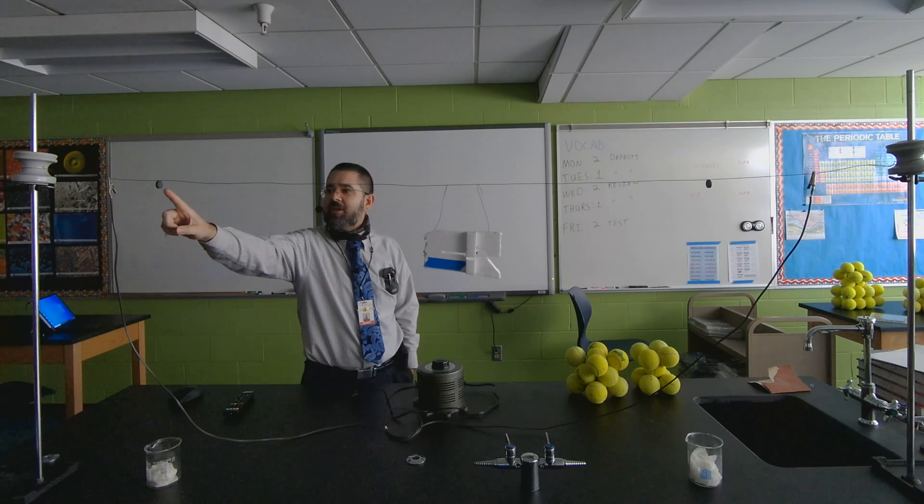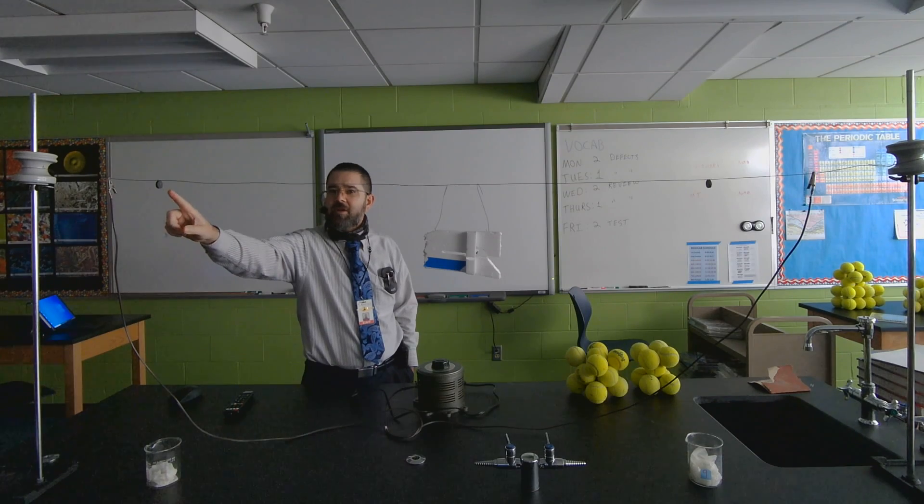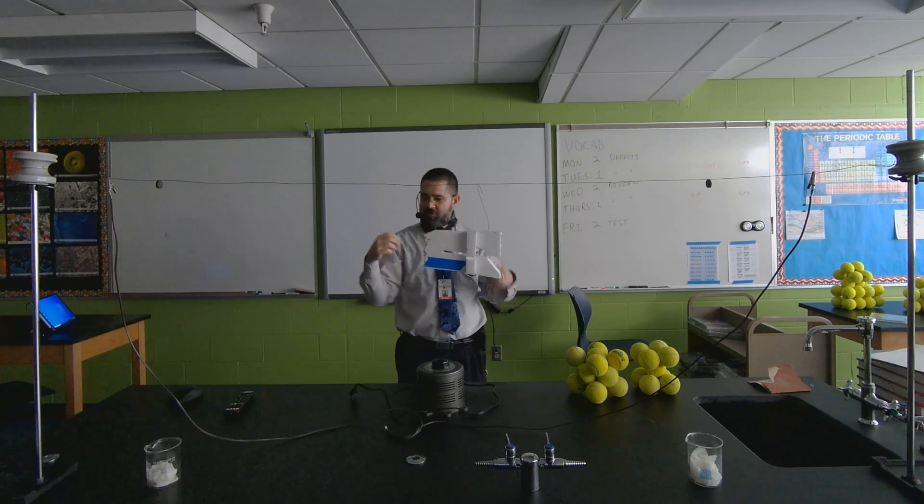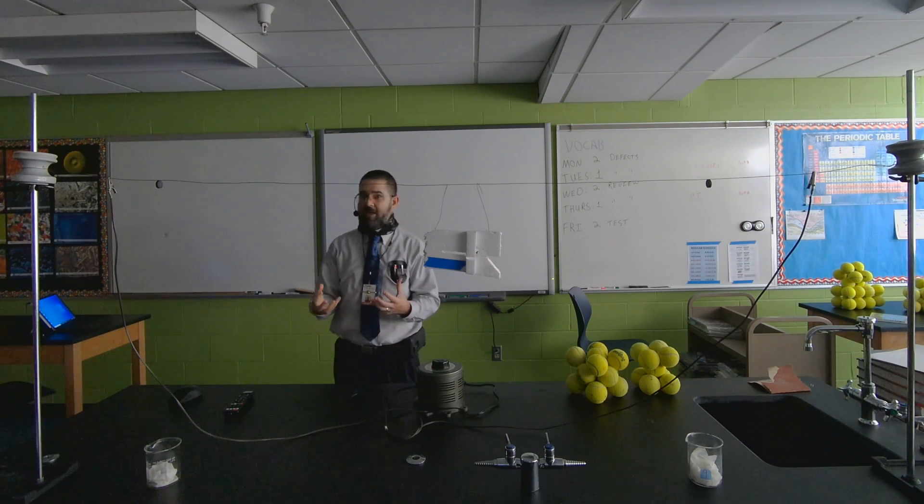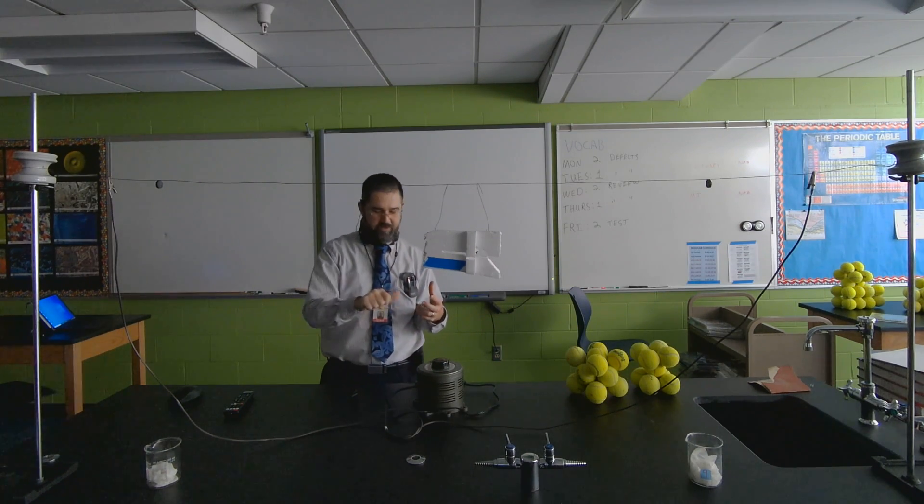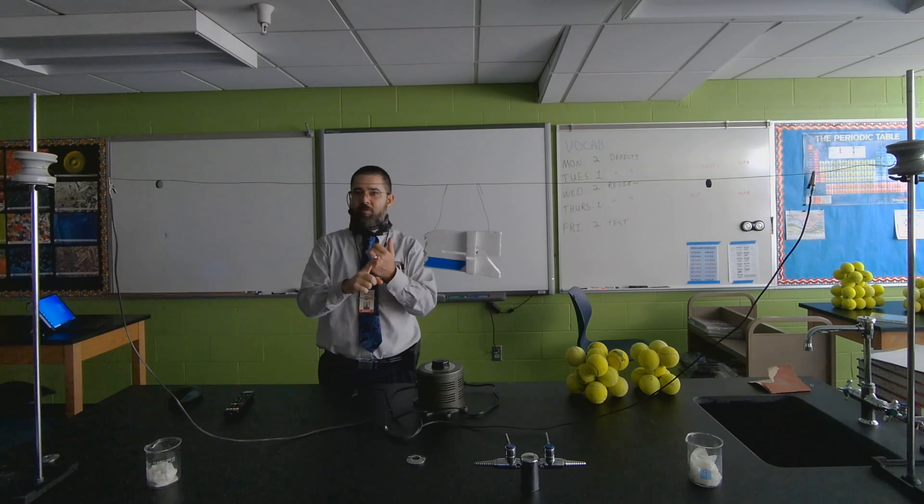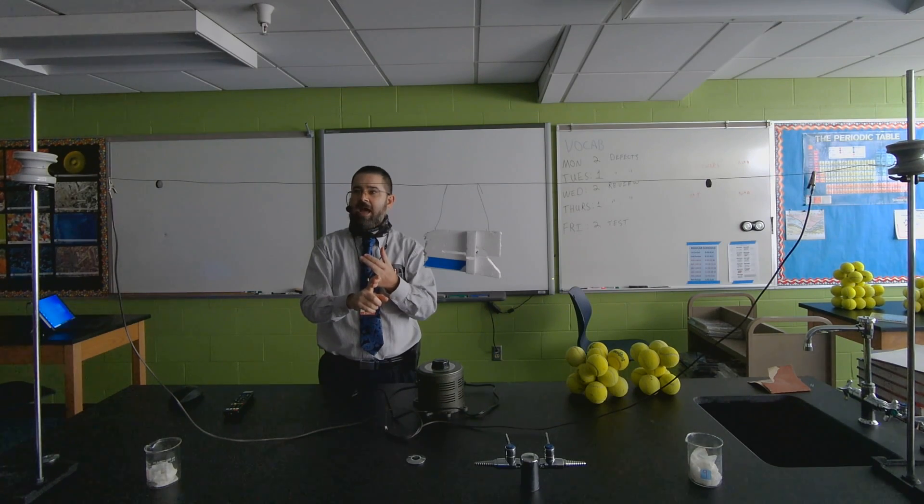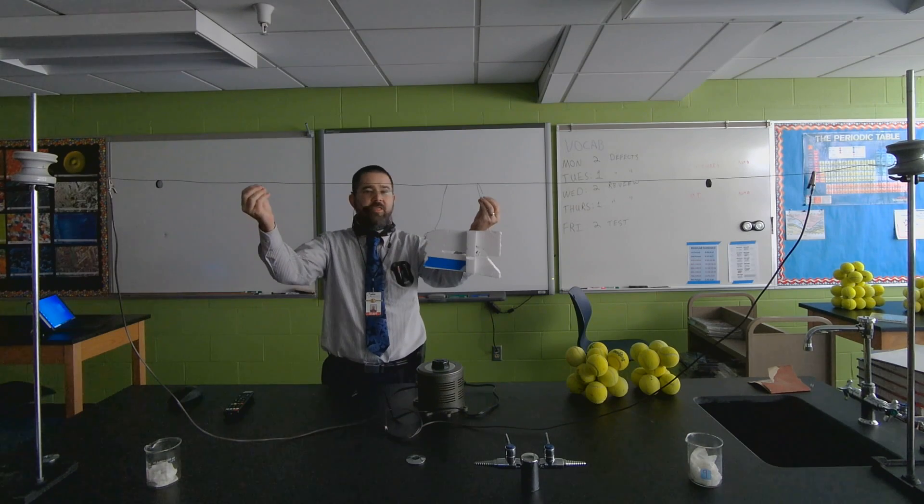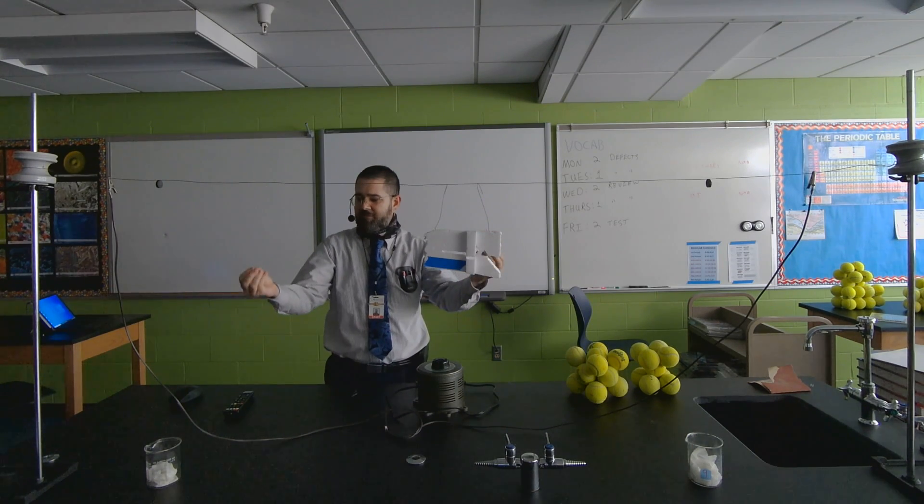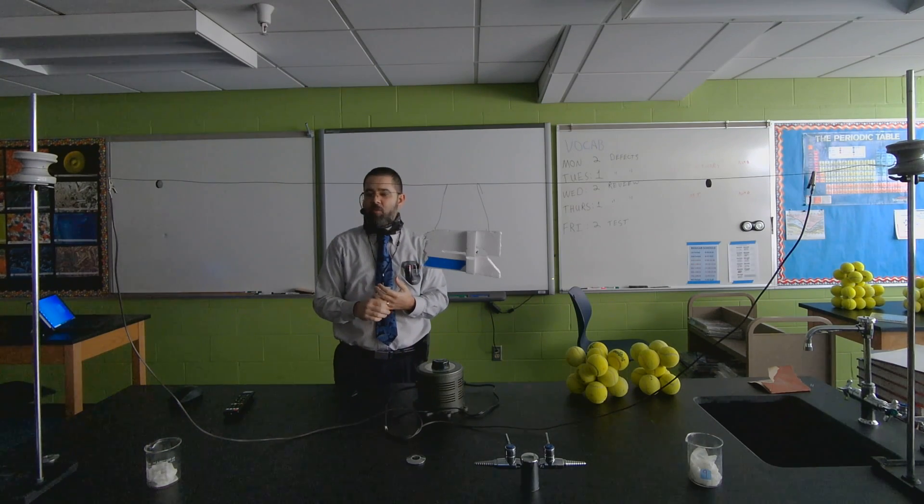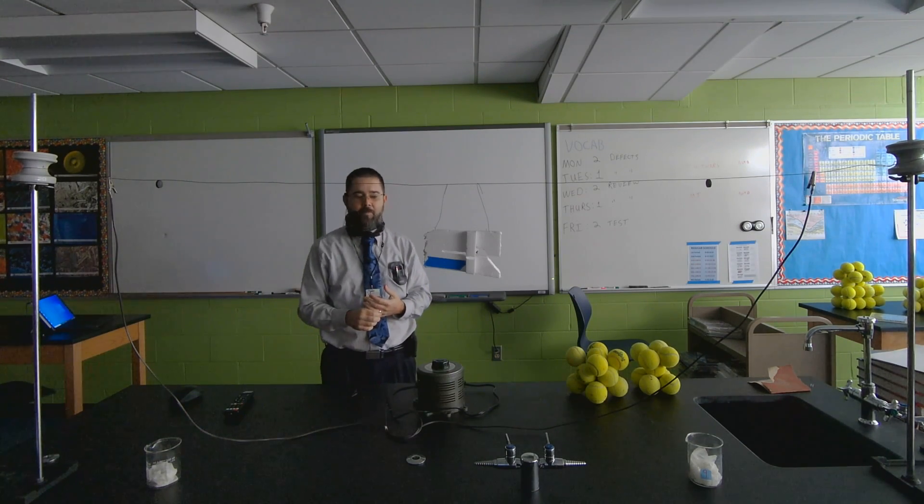The Curie temperature is a point at which you can get something that's ferrous, magnetic, hot enough that it will no longer become magnetic anymore. So these magnets that are on here, I got one here and one here. Whenever I turn this on, I'm going to give it a lot more current. I'm going to really crank it up. Look for thermal expansion - it's going to dip down. Look for incandescence - it should start to get red hot. And then look for the Curie temperature. When it hits that certain temperature, the magnets will fall off.